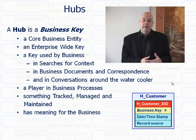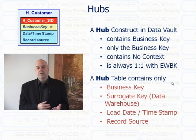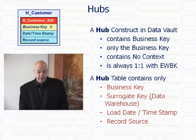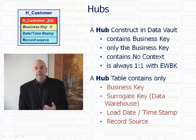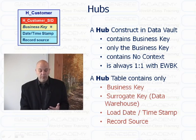From a structural perspective, the hub is a construct that contains a business key — only a business key — and it has no context whatsoever. The hub contains the business key itself, plus a surrogate key, which is the data warehouse key that we generate to manage it properly in the warehouse layer. It also has a record source and a date-time stamp so we can keep track of it. There's no description about what this thing means — it's only the key itself in this table.